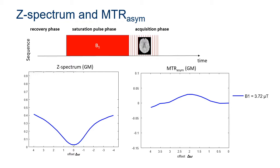The Z-spectrum and MTR asymmetry. As you saw in the previous talk, typically CEST is very synonymous with this APT-weighted CEST based on MTR asymmetry. There you use a rather high saturation before your actual image acquisition, and then you get relatively broad Z-spectra that, if you check the asymmetry, have some positive asymmetry.